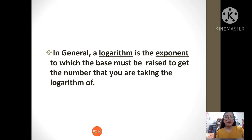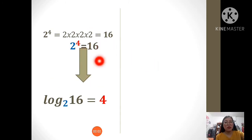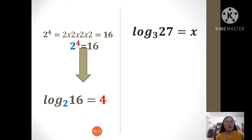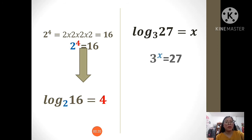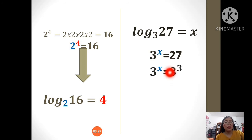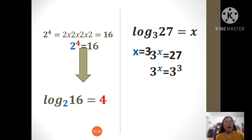Now, let us have an example. This is the illustration earlier. Log of 27 to the base of 3 is equals to x. To answer this, we should try to write it in exponential form. It will become 3 raised to x equals 27. To answer this in exponent, 3 raised to x equals 3 raised to 3, since 3 raised to 3 is equals to 27. Hence, x is equals to 3.